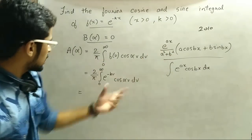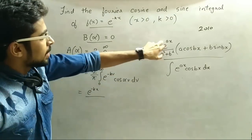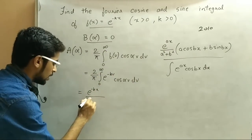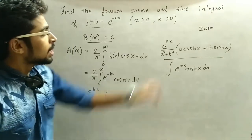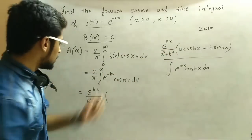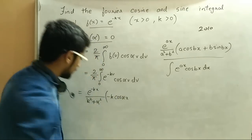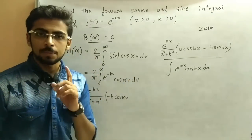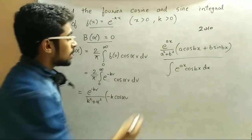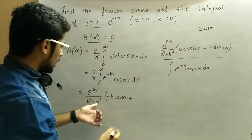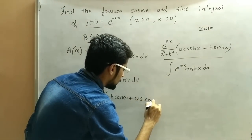So what is e^(ax)? It is e^(−kv) here. In the denominator, a is k, so it becomes k²+α². Now for the a cos(bx) part, a is −k and cos(bx) is cos(αv). Note that we are integrating with respect to v, so we put v here. Next, the b sin(bx) part gives plus α sin(αv).